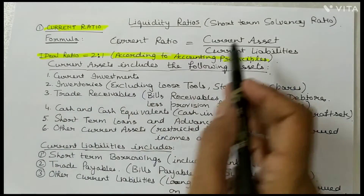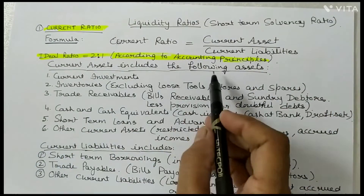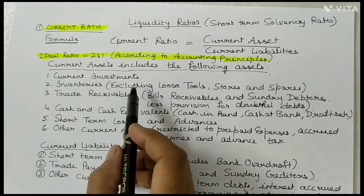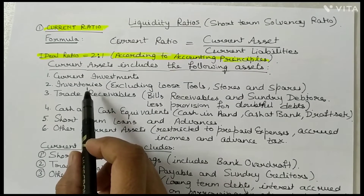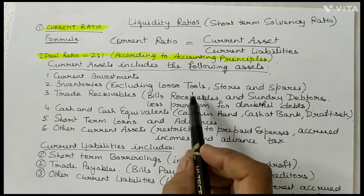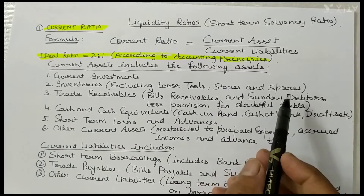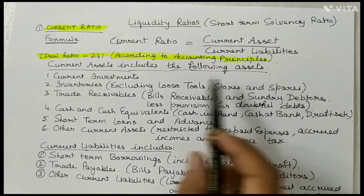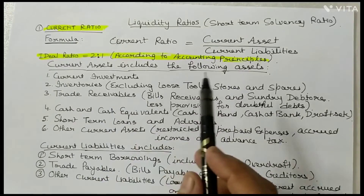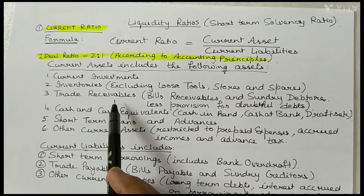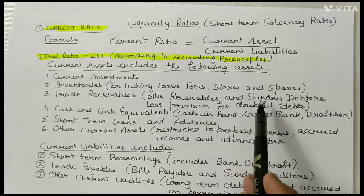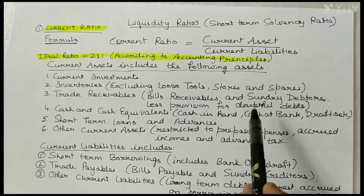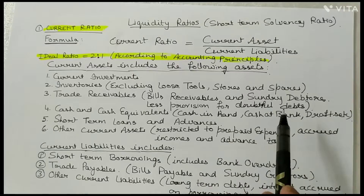Current Assets include the following: Current Investments; Inventories or stock, excluding Loose Tools, Stores, or Spares — these are not included in Inventories; and Trade Receivables, which are Bills Receivables or Sundry Debtors, but you have to deduct Provisions for Doubtful Debtors.